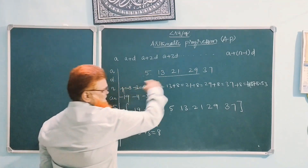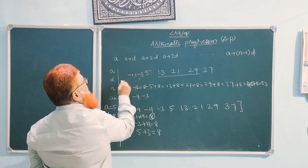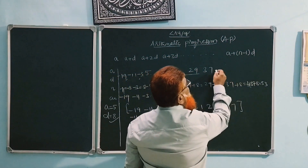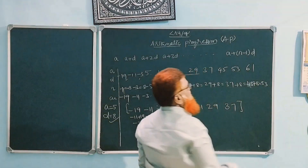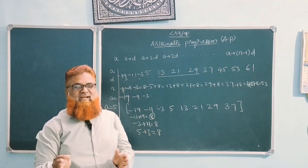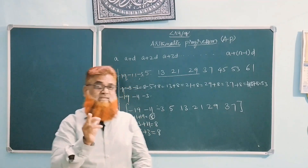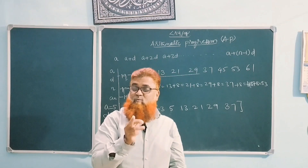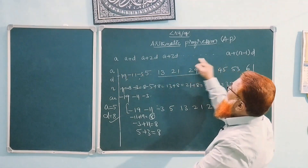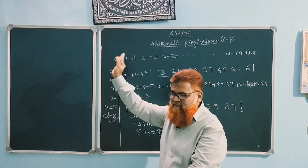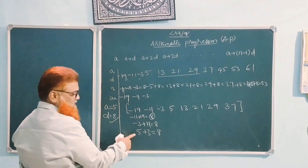The preceding term to 5 is −3, then −11, then −19. The succeeding terms are 45, 53, 61. So this is the way we can develop a well-rounded concept of an AP. We don't have only A, A+D, A+2D — we also have terms preceding A.